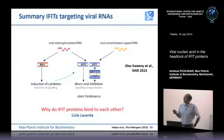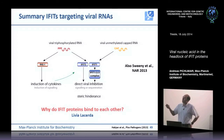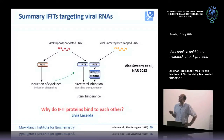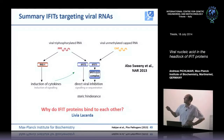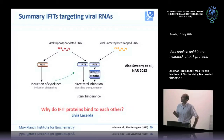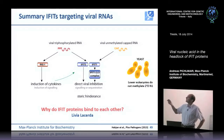One question I want to touch on briefly: why do IFIT proteins really need to bind to each other? We prominently observe the complex forming between IFIT1, 2, and 3, but we don't know exactly why. To study this, we turned to a system not commonly used in the community — yeast — because lower eukaryotes do not normally methylate their RNA at the 2' O position. This 2' O methylation only arose in the transition from invertebrates to vertebrates, so yeast lack it.